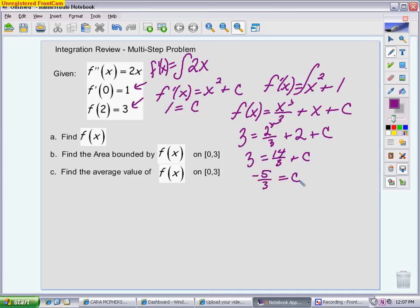So the answer to part A is that my function is x cubed over 3 plus x minus 5 thirds. That would have been something that you would have done on the last quiz, because that was the beginning of the chapter material.